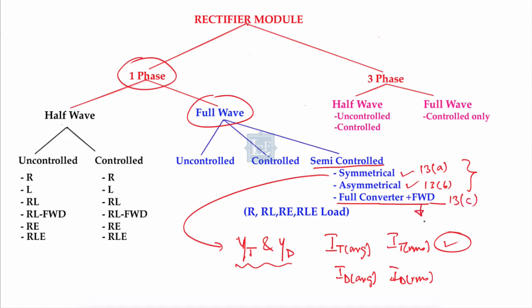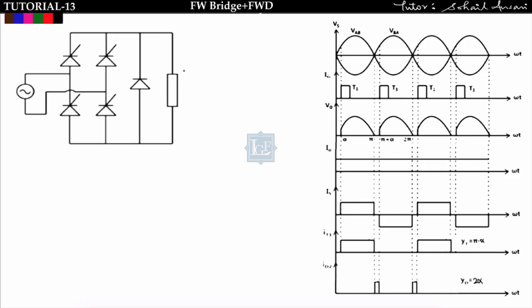Let us proceed to the first slide. This is the single-phase full-wave bridge converter with a freewheeling diode. The voltage across the freewheeling diode is vd. We studied the single-phase full-bridge converter without a freewheeling diode in lecture 12 and found the harmonic series. By attaching one freewheeling diode like this, it will behave like a semi-converter. So single-phase full-wave converter plus freewheeling diode is nothing but a semi-converter.